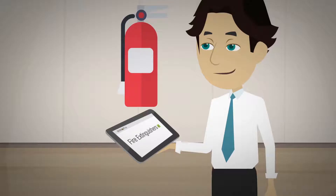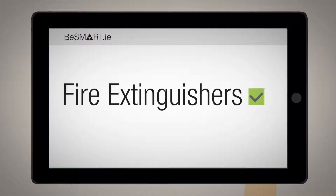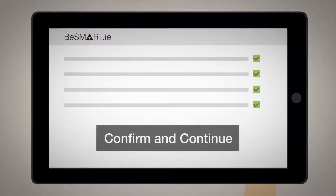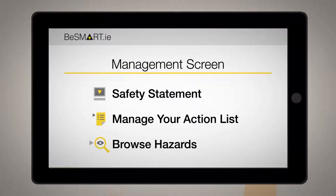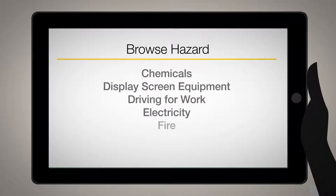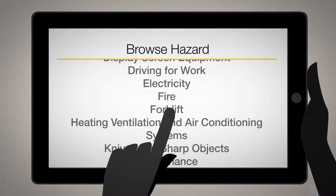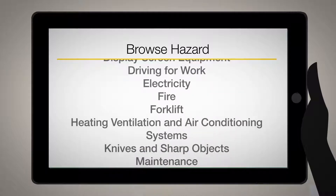Check that any controls you have said yes to are actually in place and working. Identify any other hazards that were not listed on your hazard panel and make a list of them. Click confirm and continue to get to your management screen, where you can use the browse hazard function to look for the hazards on the list you made and risk assess them.